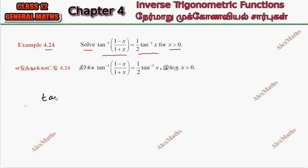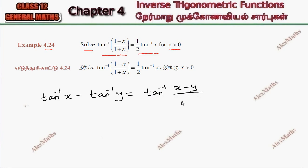So the formula is: tan inverse x minus tan inverse y equals tan inverse of (x minus y) by (1 plus xy). The condition for applying this formula is that the product xy is greater than minus 1.